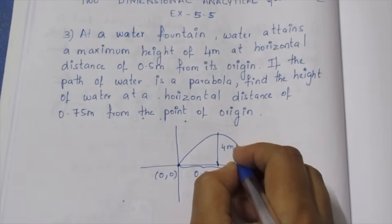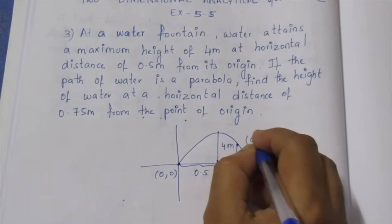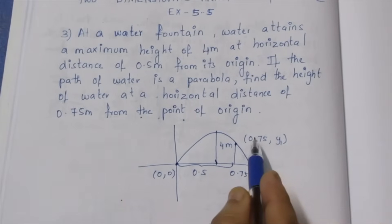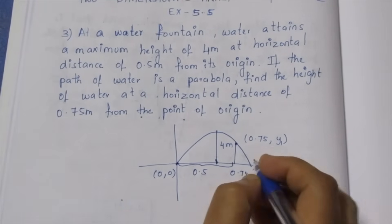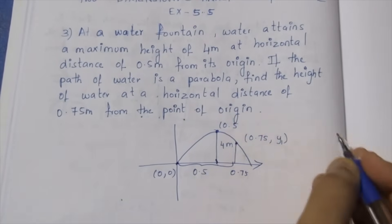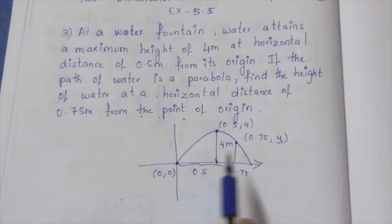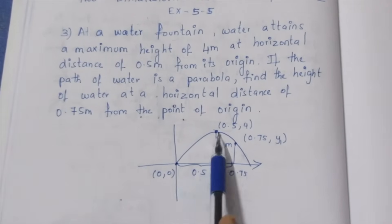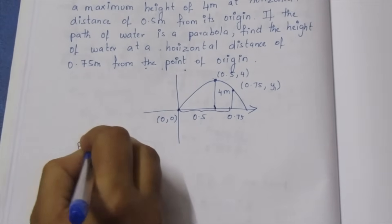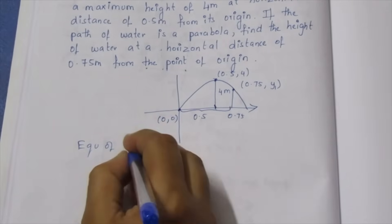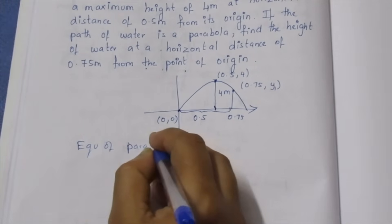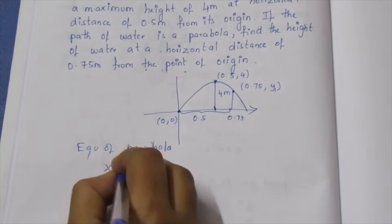The x-axis is placed along the base and the y-axis value is 4. This is the origin of the vertex. The origin of the parabola — the equation of the parabola is: x minus h, the whole square...